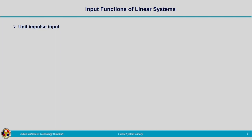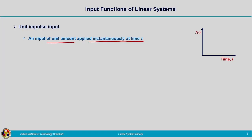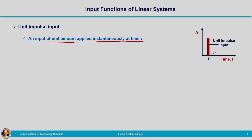Now let us look at different types of inputs used in hydrologic analysis. The first is unit impulse input — an input of unit amount applied instantaneously at time τ. Plotting input on the y-axis and time on the x-axis, a unit input is applied instantaneously at time τ. This time can be any value between 0 and t, but the input is applied instantaneously. That is the unit impulse input.